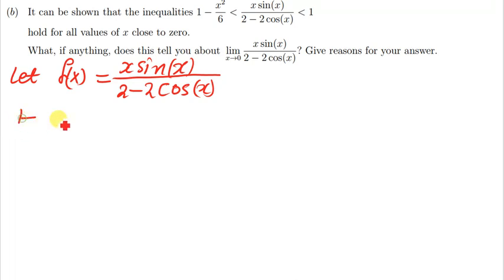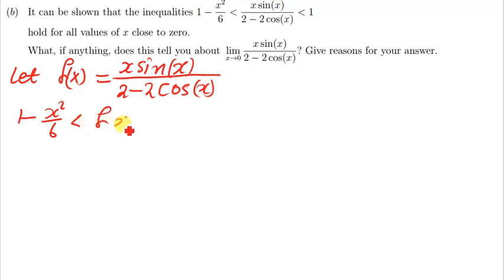Since f(x) represents that function, this means the inequality can be written as: 1 minus x squared over 6, less than f(x), less than 1.